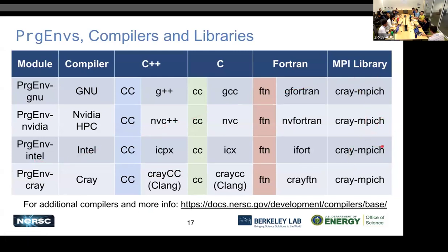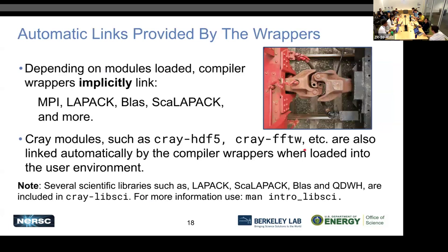The MPI library we recommend is cray-mpich — keep that the same unless you're specifically studying open MPI. Depending on what modules you have loaded, a lot of things will implicitly link — meaning you won't see them on the link line, but they'll be linked behind the scenes by the compiler wrapper, such as MPI, linear algebra, LAPACK, BLAS, and more. If you have other modules loaded, such as cray-hdf5 or cray-fftw, they'll also get included automatically — so you don't have to modify that compile line. You can still use the same 'cc' command.